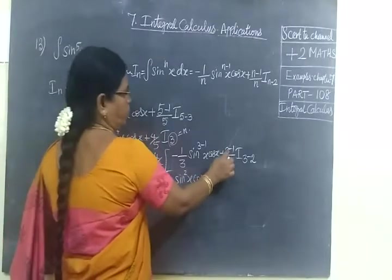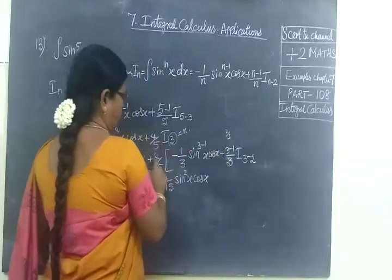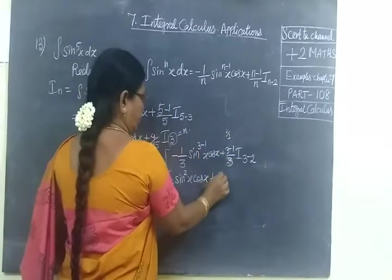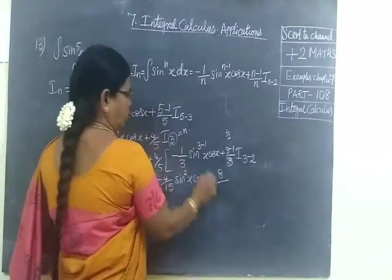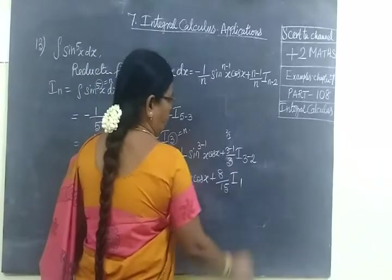So 2 by 3 times 4 by 5. Here, 8 by 15 I_1.